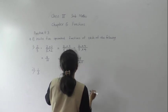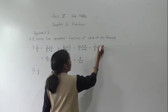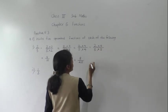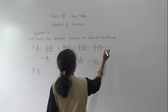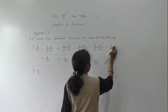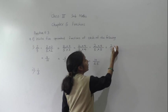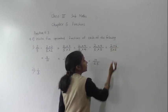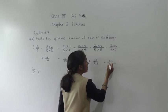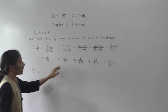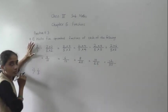We need 5 fractions total. Multiply 2 upon 5 by 5: 2 fives are 10 and 5 fives are 25, giving 10 upon 25. Then multiply by 6: 2 sixes are 12 and 5 sixes are 30, giving 12 upon 30. So we got 5 equivalent fractions for the given fraction 2 upon 5.